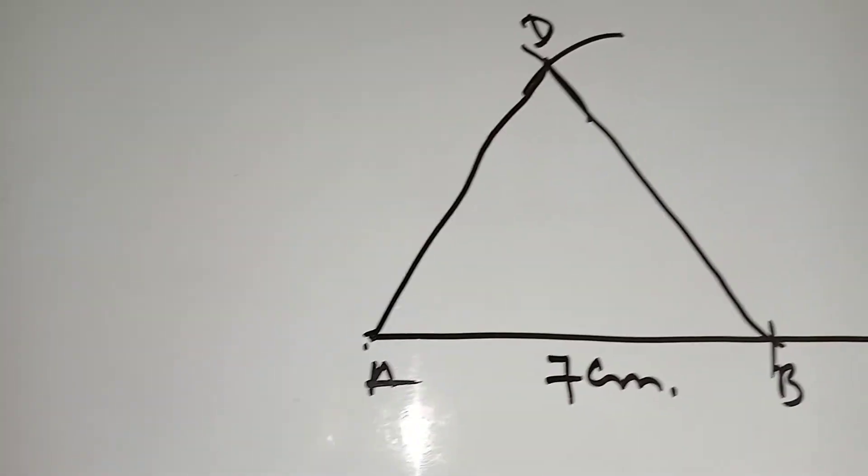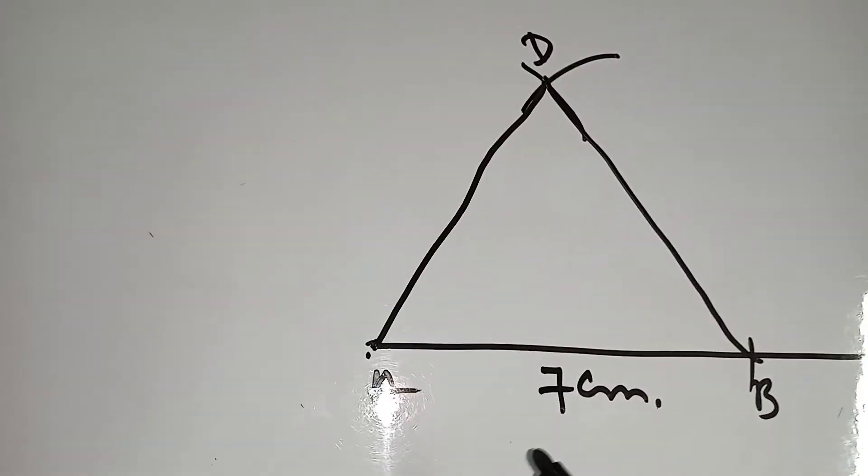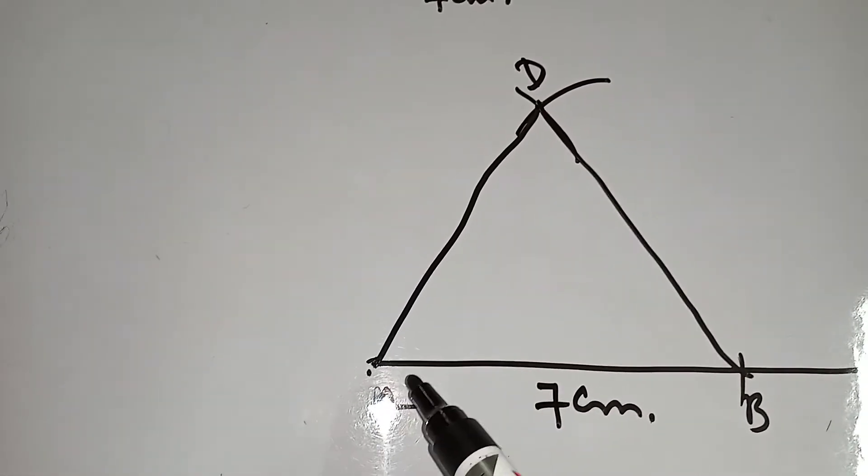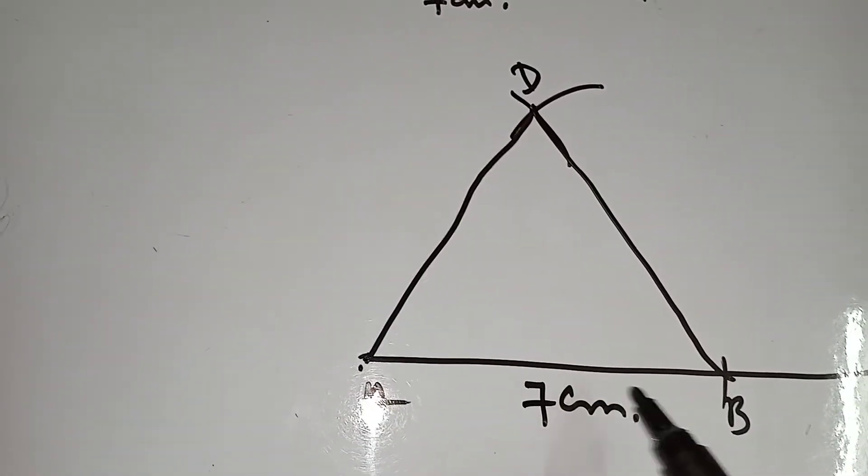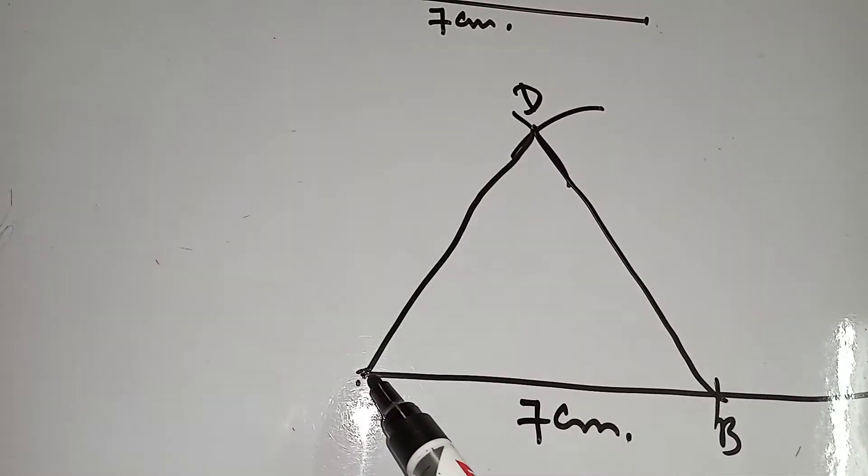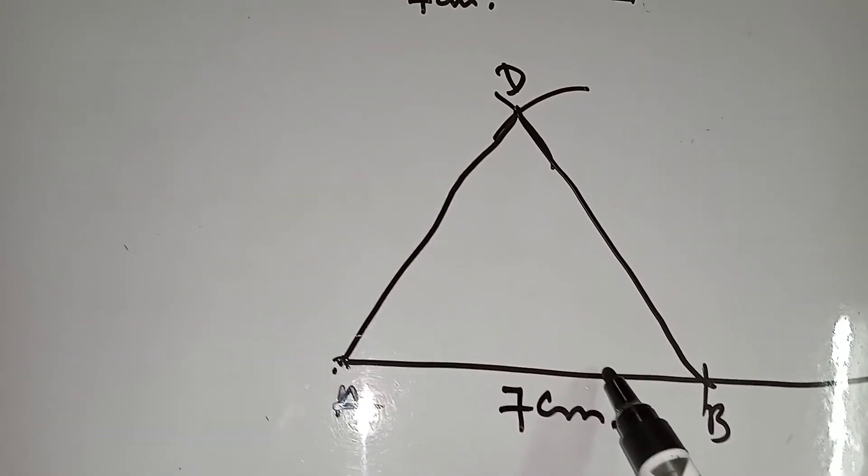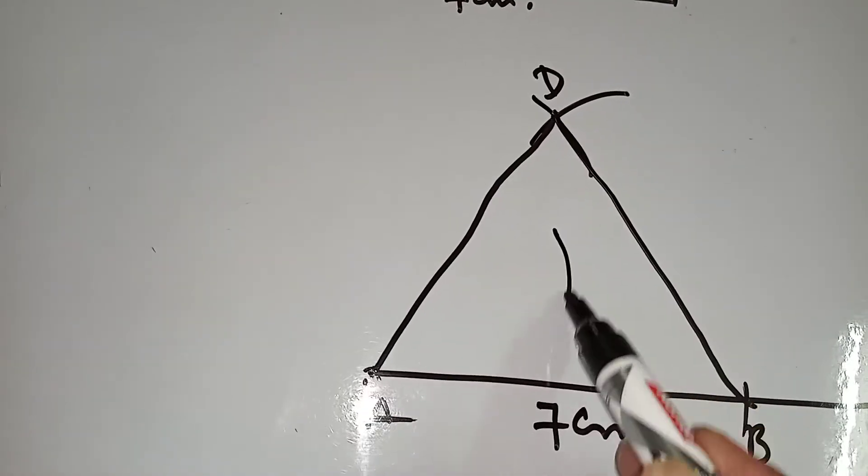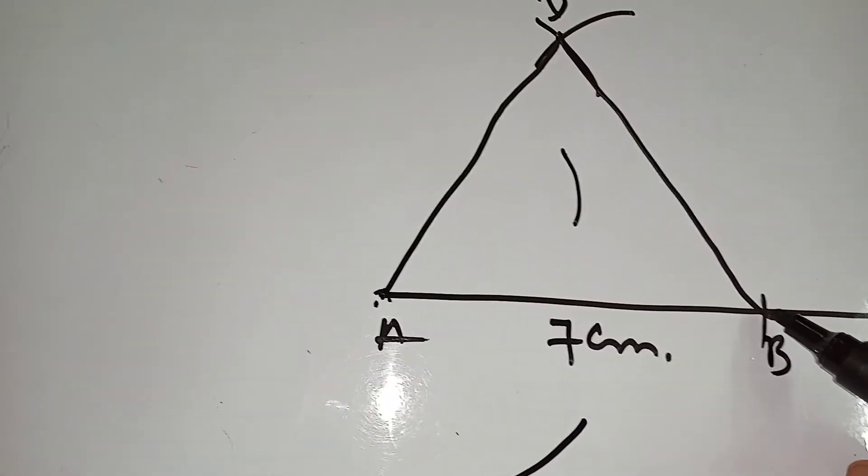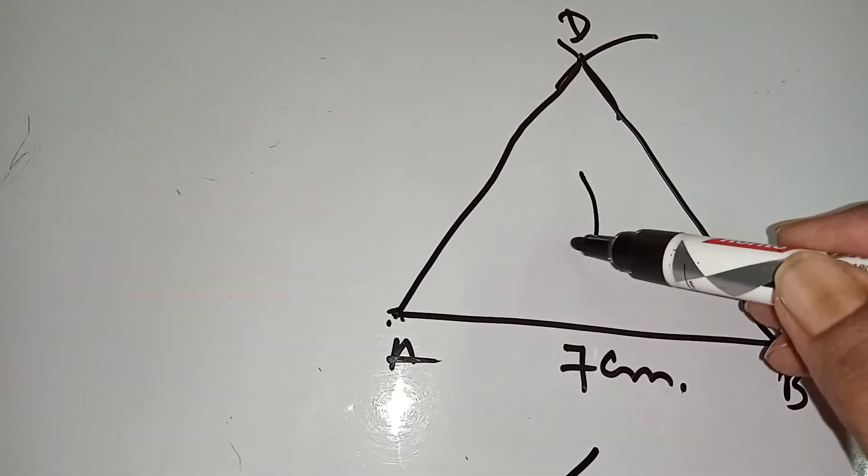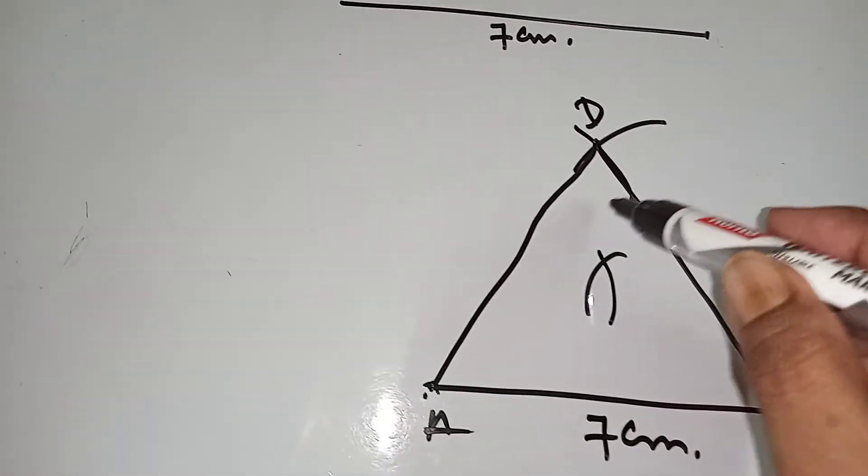To construct the circumcircle, at first bisect any two sides of the triangle. Suppose A B. Put the compass here and take the measure of more than half and draw two arcs here. Again, put in B, take more than half the same measurement and draw two arcs. Now join.